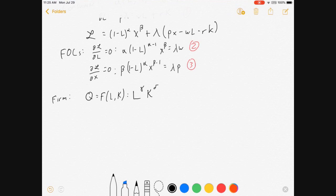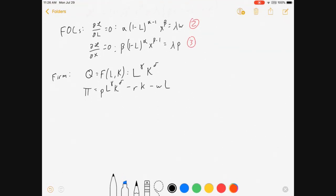So profit then is equal to price times quantity, so P L to the gamma, K to the delta, minus costs, and I said that his only costs were the variable cost from the firm. So RK minus WL. Price times quantity minus costs, total revenue minus total cost.